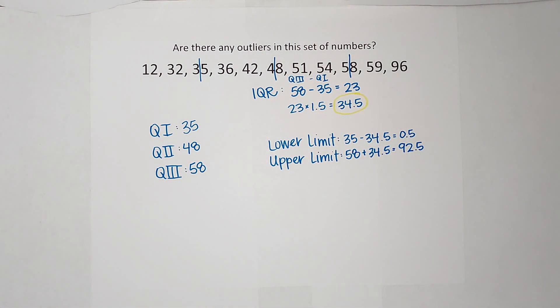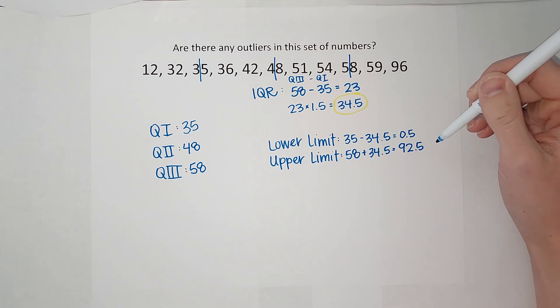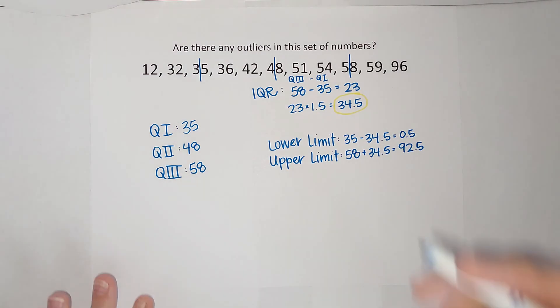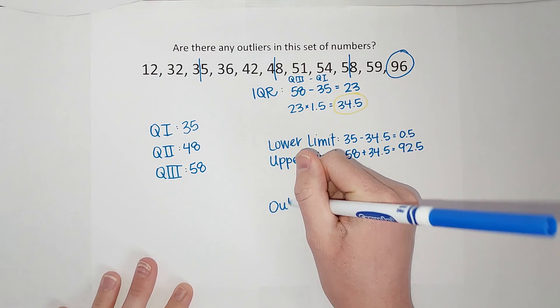So these are my limits. Which means anything lower than 0.5 is considered an outlier, and anything bigger than 92.5 is considered an outlier. So if we look at our set of numbers, you can see we have one outlier in this case. And it is 96.